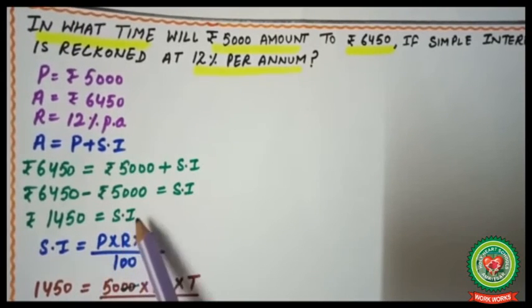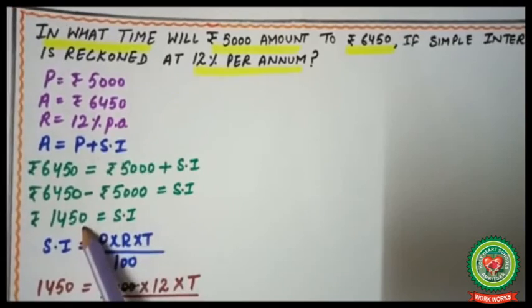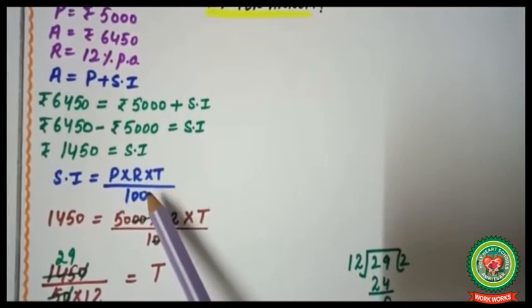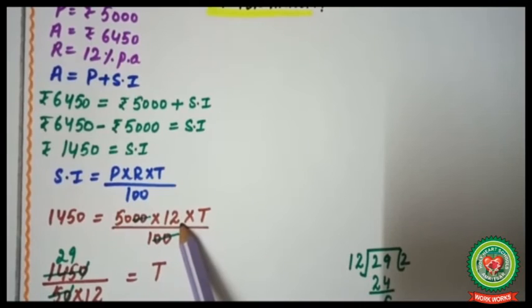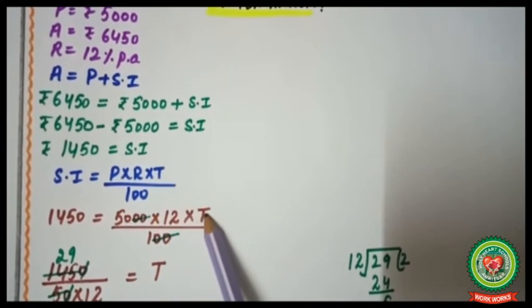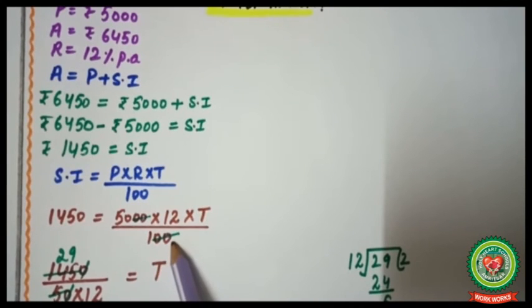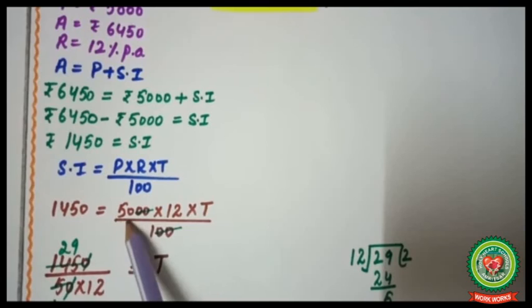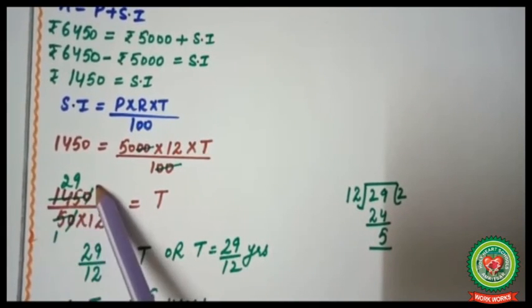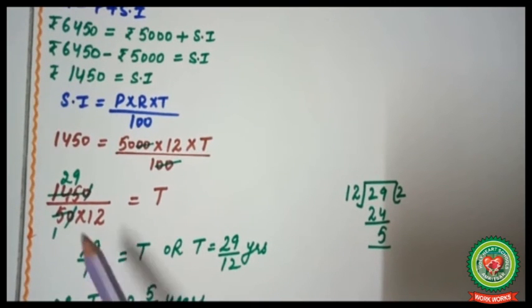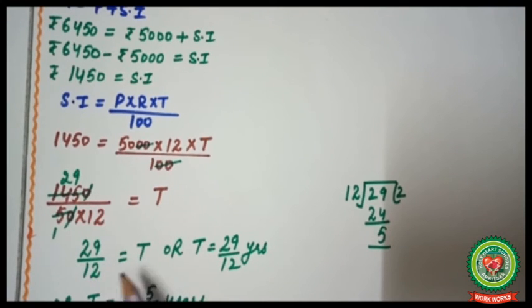Applying SI = P × R × T / 100: 1450 = 5000 × 12 × T / 100. We cancel the two zeros so 1450 = 50 × 12 × T. Shifting 50 and 12 to the left to divide: on the five table, 145 gives 29; so we get T = 29/12.